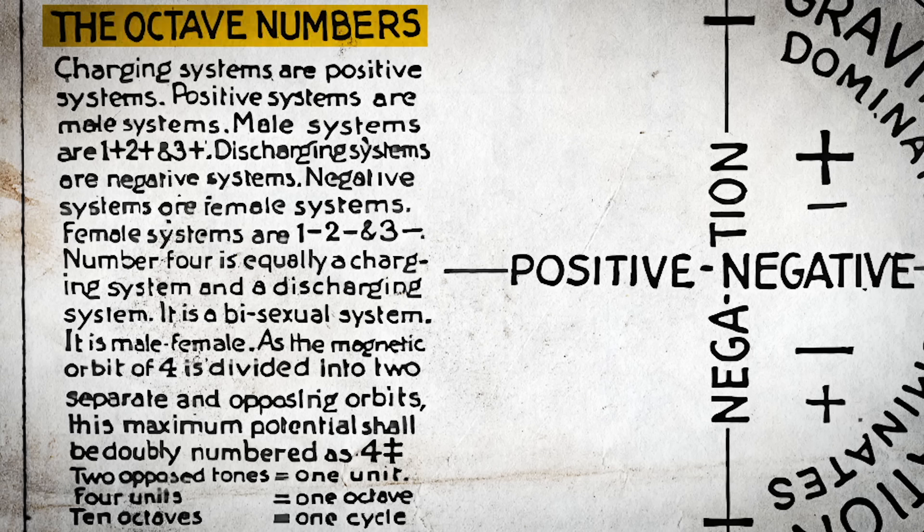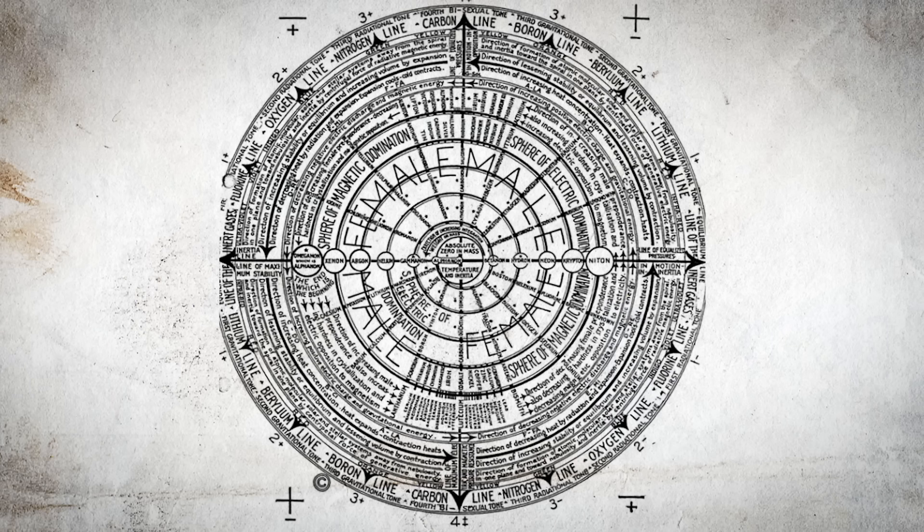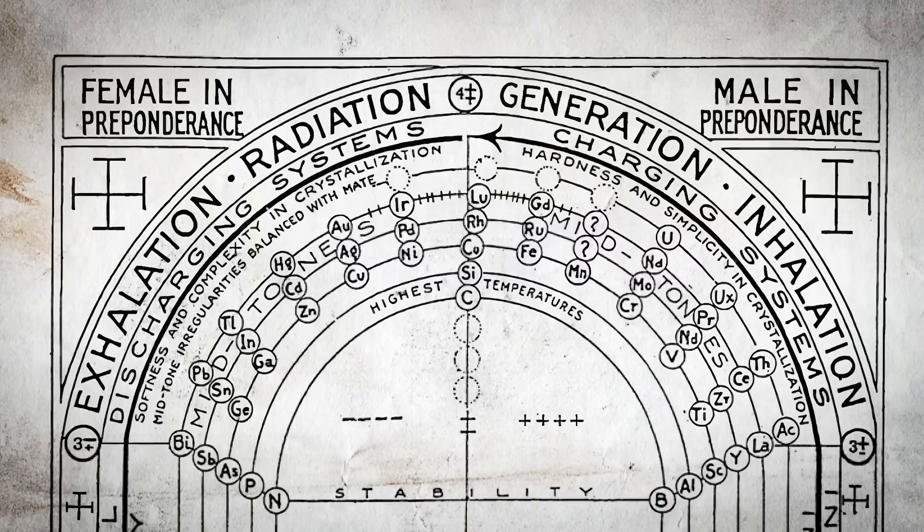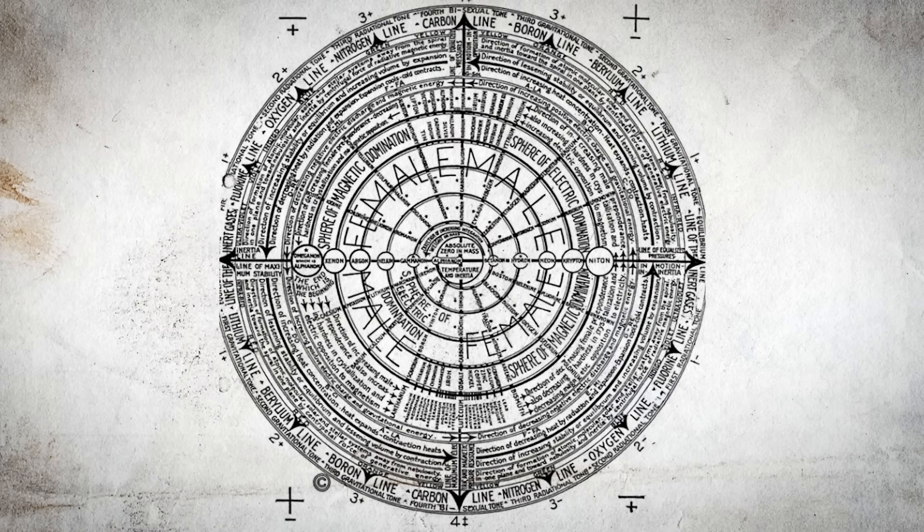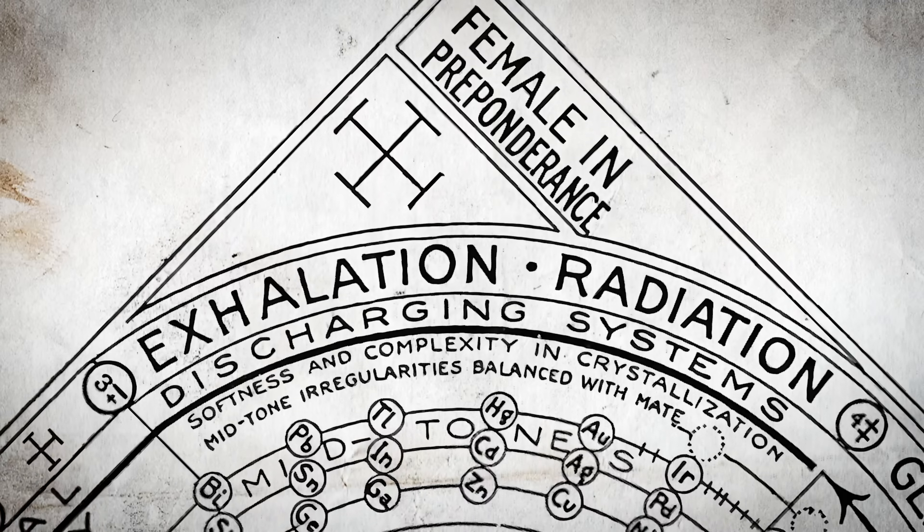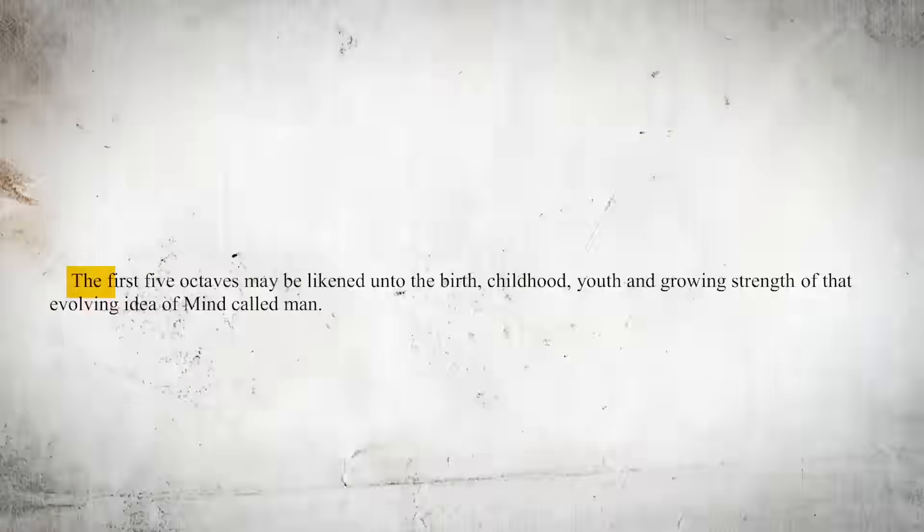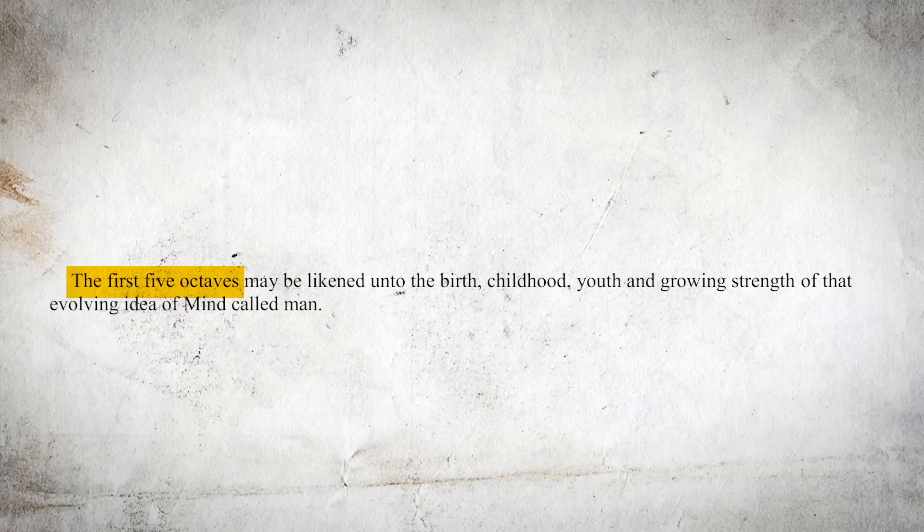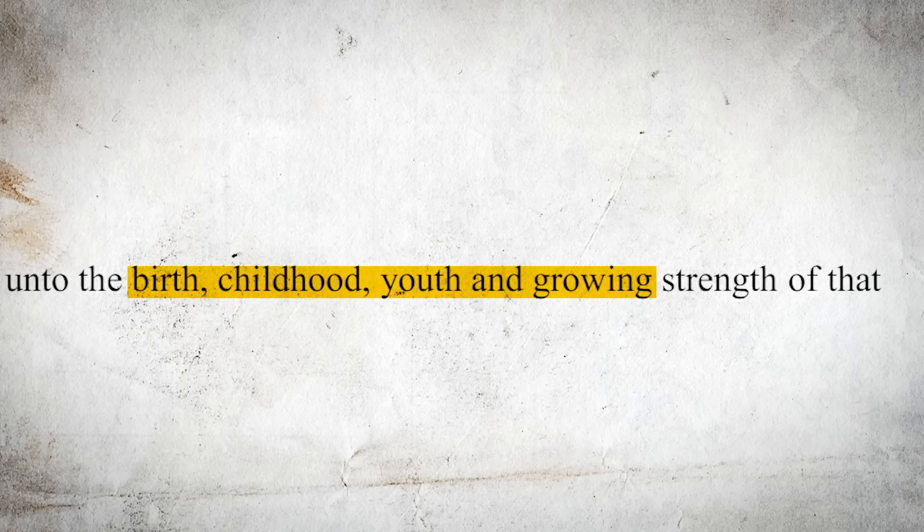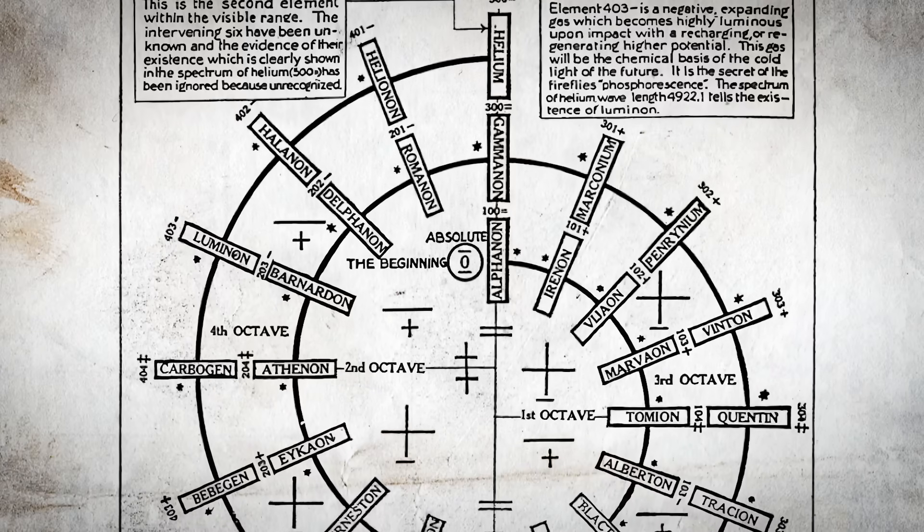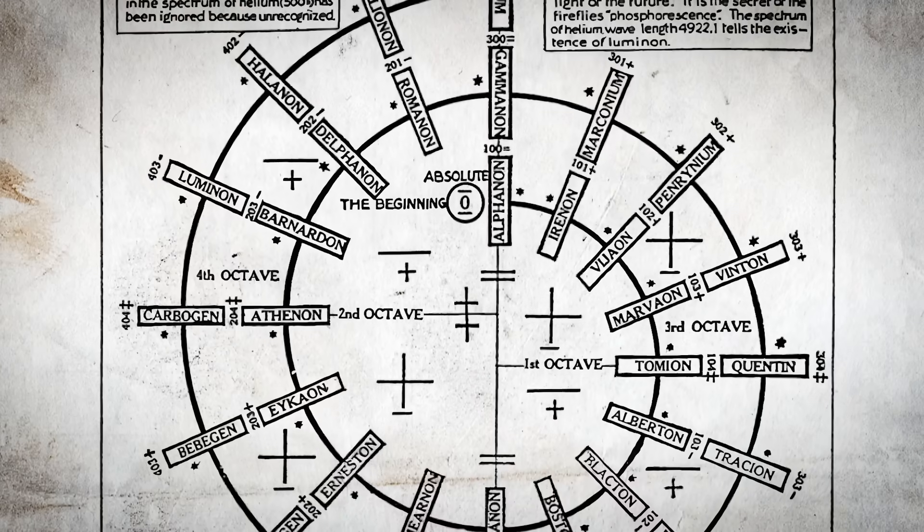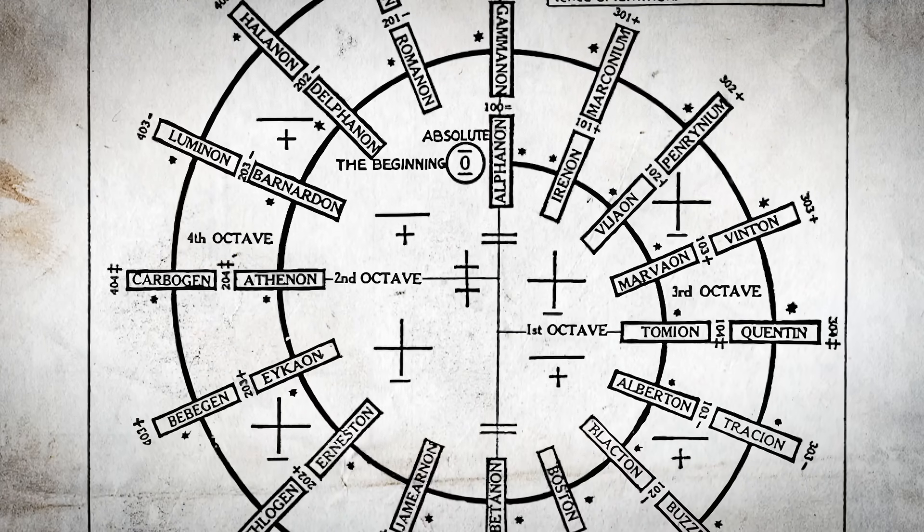Russell further anthropomorphizes the octaves by associating them with genders. The first five octaves are described as male, or electropositive, characterized by their generative, energy-accumulating nature. In contrast, the second set of five octaves are female, or electronegative, focusing more on energy release and expansion. To make this even more relatable, Russell likens the first five octaves to the stages of human growth, from birth through youth, mirroring the increasing strength and complexity of an evolving idea, or in this case, the progressive complexity of matter.